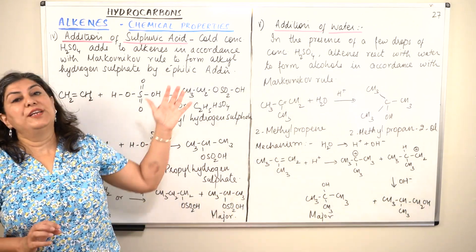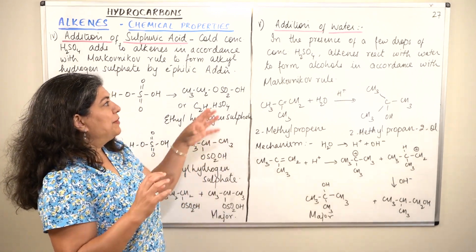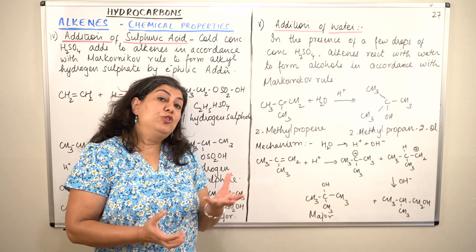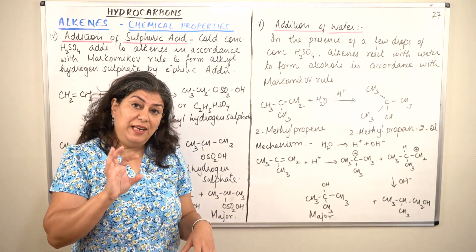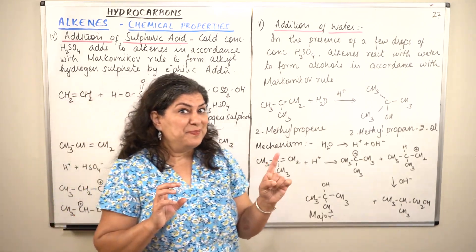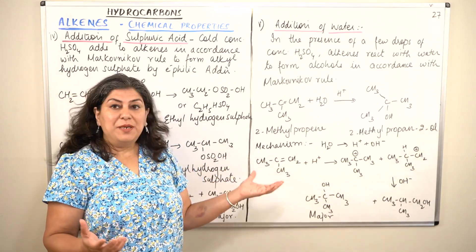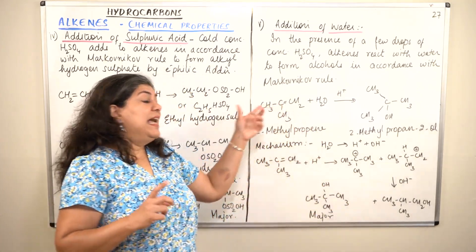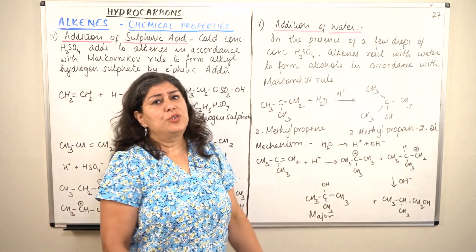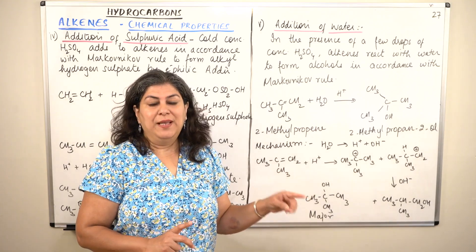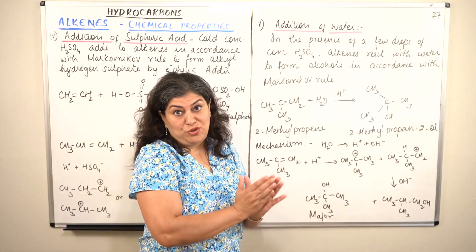The same thing is seen in the case of addition of water. If you take a water molecule in a slightly acidic medium — such as in the presence of concentrated H₂SO₄ — water also turns ionic and breaks down into H⁺ and OH⁻. So H⁺ acts as the electrophile and OH⁻ is the negative part of the addendum. Addition of water will also follow Markovnikov's rule if the alkene is unsymmetrical. The major product will have OH⁻ adding to the carbon with the lesser number of hydrogens.